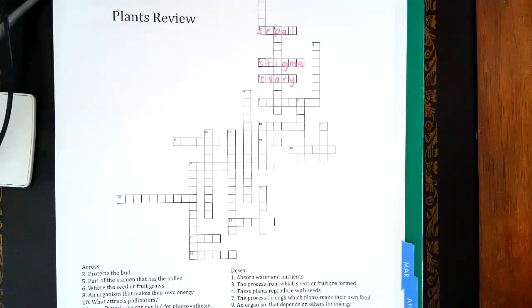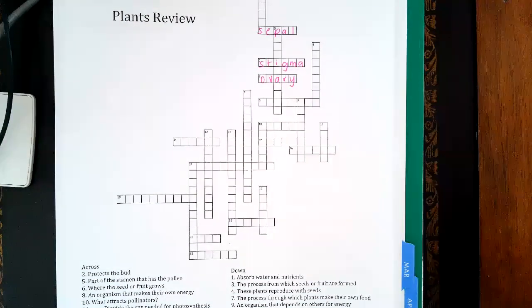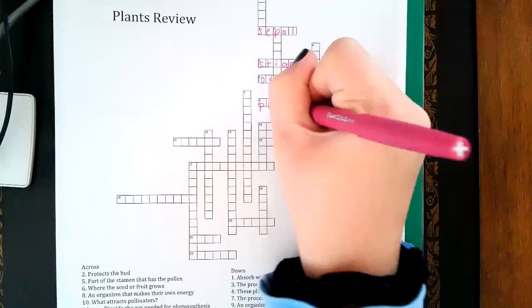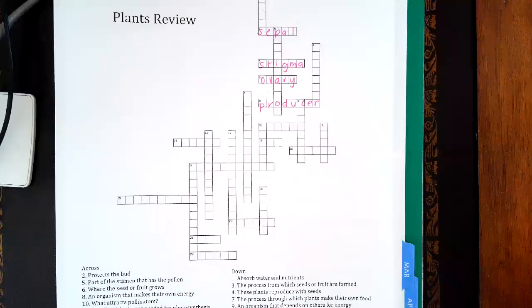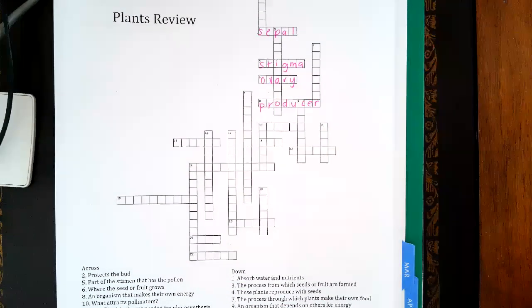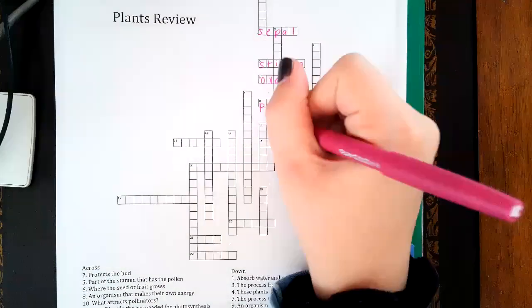Number eight: the organism that makes its own food - that's called a producer. So all plants are producers. What attracts pollinators like bees? That would be petals.